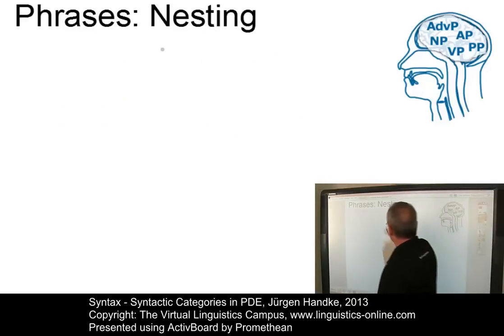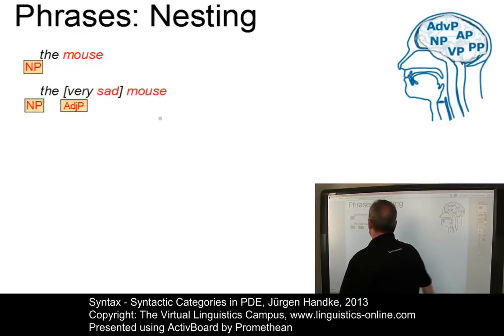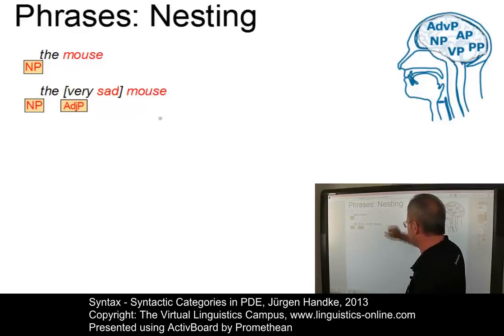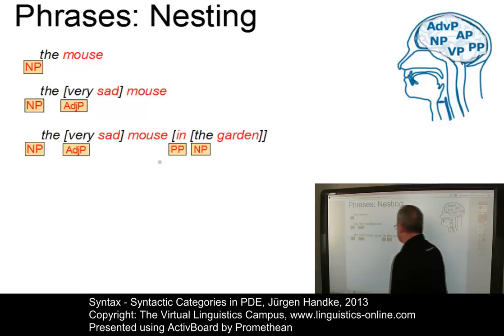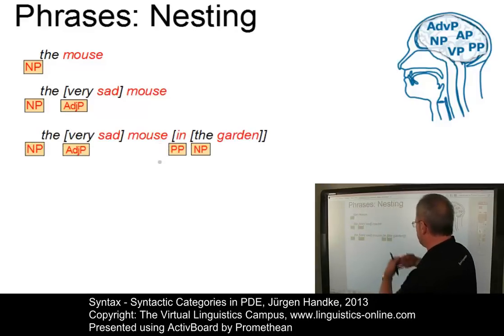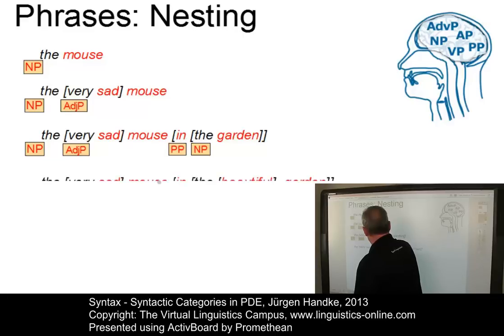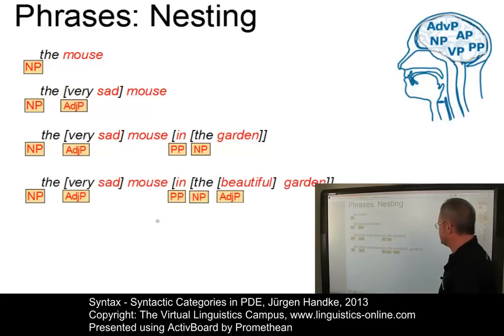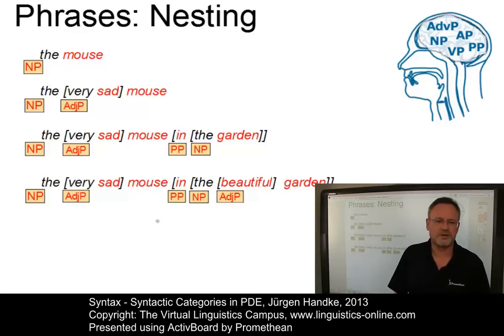Here are some examples of nested phrases. First, the noun phrase the mouse. If we integrate an adjectival phrase within it, we get the very sad mouse, with the head marked. The next example is a prepositional phrase occurring as a post-modifier of the noun phrase, where the prepositional phrase itself contains another noun phrase. And in the last example, another adjectival phrase has been added to the noun phrase, which is part of the prepositional phrase, which is part of the overall noun phrase.